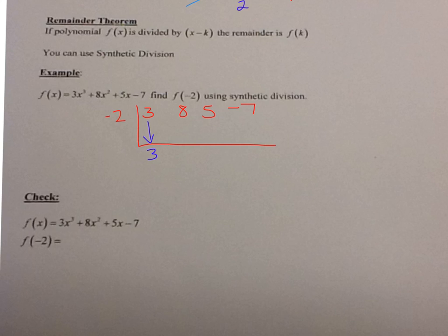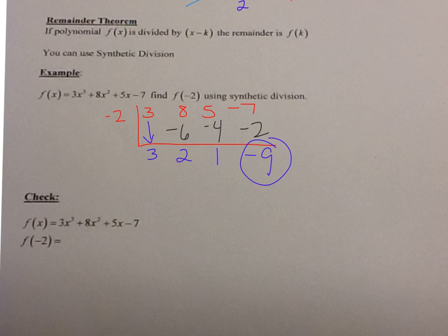Negative 2 times 3 is negative 6. 8 minus 6 is 2. 2 times negative 2 is negative 4. 5 minus 4 is positive 1. Negative 2 times 1 equals negative 2. Negative 7 minus 2 is negative 9. That's my remainder. So f of negative 2 is equal to negative 9 — it equals my remainder. Whatever you're dividing by out here is going to equal your remainder when you evaluate that function.